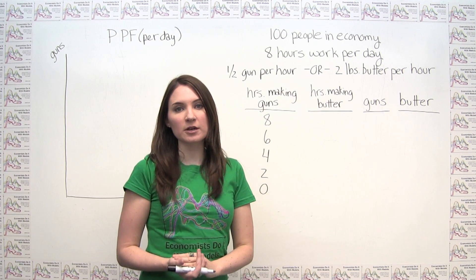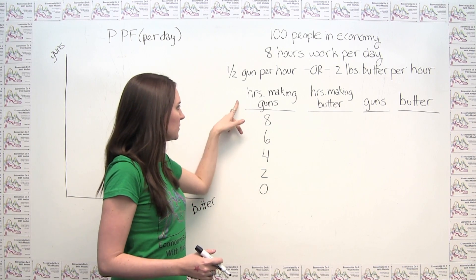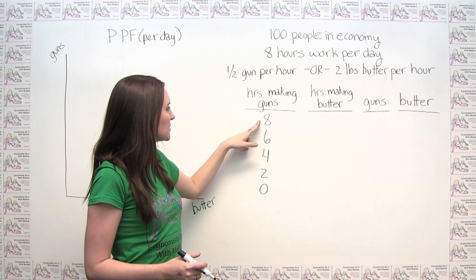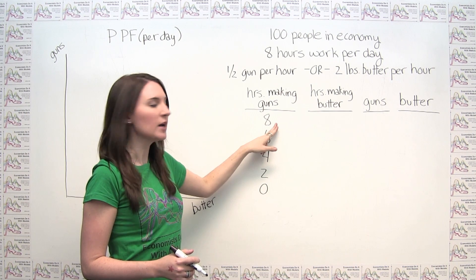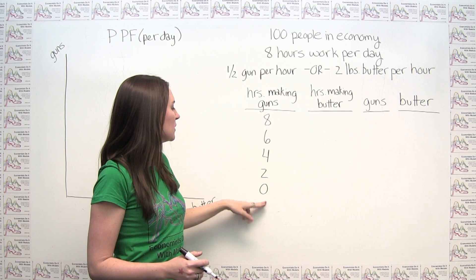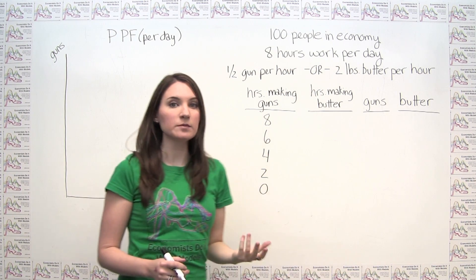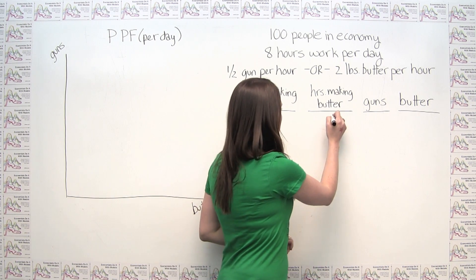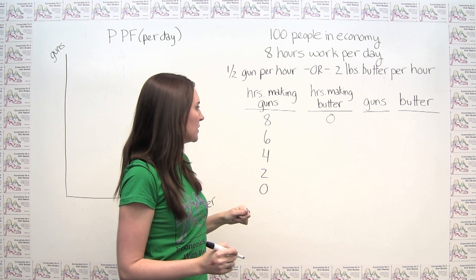We can show in the aggregate for the economy overall how much production we can have as a function of hours making guns. Let's examine what happens as we move from making only guns — spending all of our time doing that — down to spending no time making guns. If each person is working eight hours per day and spending all eight hours making guns, they're spending zero hours making butter.